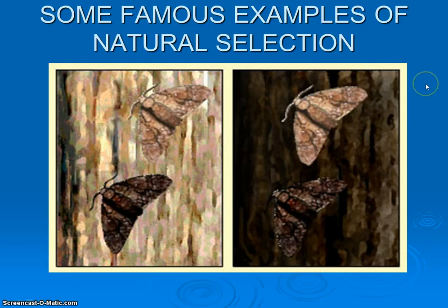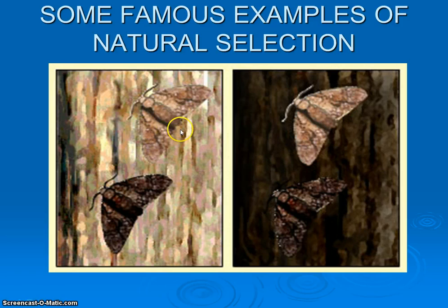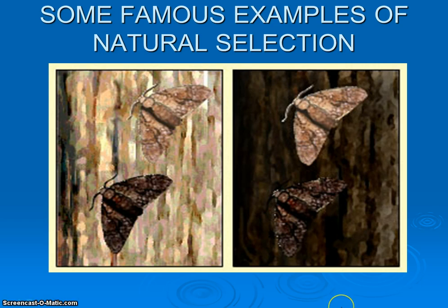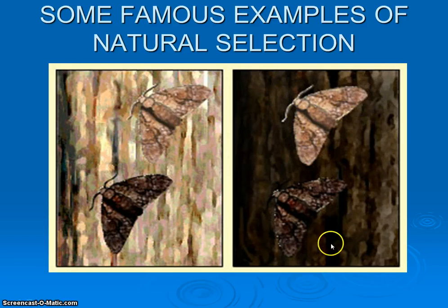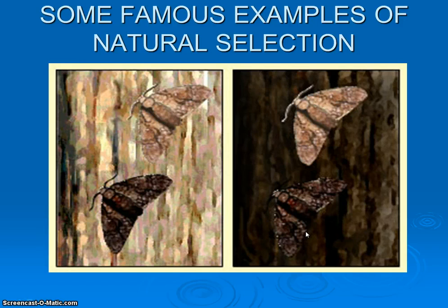The peppered moth example: prior to the Industrial Revolution, most trees had a light coloration. In that environment, lighter colored moths had an advantage — they were naturally selected for — while darker colored moths stood out more and were eaten by predators, primarily birds. However, over a very quick period of time, through massive amounts of pollution, soot and particulate matter covered the trees, turning the background a darker color. Now the lighter colored moths stood out more. The darker coloration was selected for, the lighter moths were eaten at a higher rate, and the population shifted back toward the darker end of the spectrum.